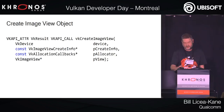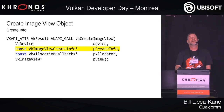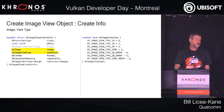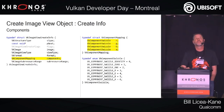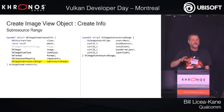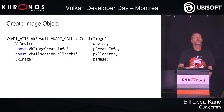All the frame buffer attachments are image views. The image view create info requires: the image it's related to, the view type (1D, 2D, cube, 1D array, 2D array, or cube array — typically 2D or 2D array for frame buffers), a component mapping, and the sub-resource range — which slice or sub-resource of the underlying 1D, 2D, or 3D image the view refers to.